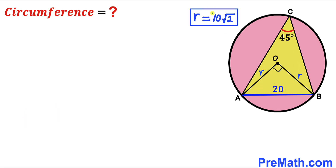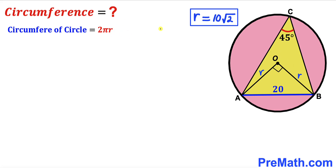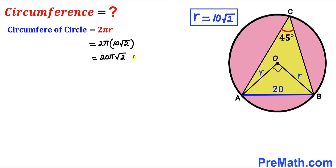Now since we figured out our radius as 10 times square root of 2 units, we are going to calculate the circumference of this circle. Recall the circumference formula: circumference equals 2πr, where r is the radius. In our case the radius is 10√2, so the circumference is 2 times π times 10√2, which simplifies to 20π√2 units.